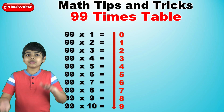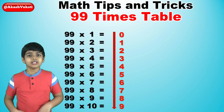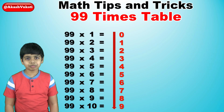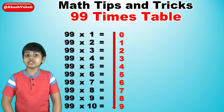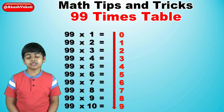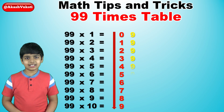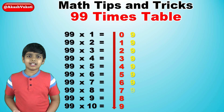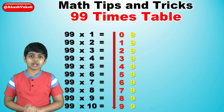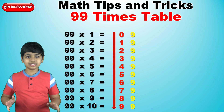So now that we have the leftmost digit down, let's work on the middle one, which is really simple because it's just the number 9. So that's just 9, 9, 9, 9, 9, 9, 9, 9, 9, 9. It's just 9s in the middle column. So that's really easy.